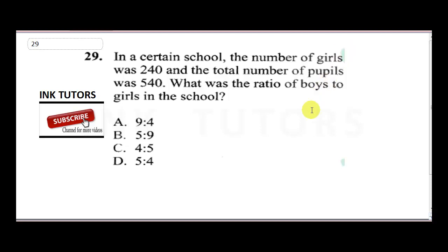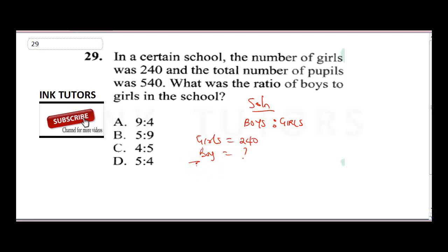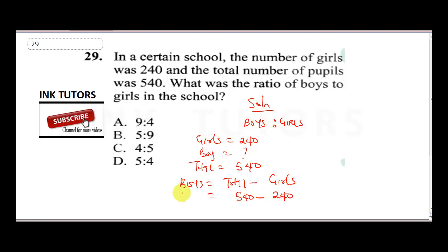To solve this question, we need the ratio of boys to girls. Girls was given as 240. Boys was not given, but the total is 540. Therefore, boys is going to be the total minus girls: 540 minus 240. So the total number of boys is going to be 300.